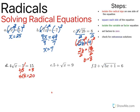Now we need to get rid of that four outside the radical symbol. We're going to do that by dividing both sides by four. Once I divide both sides by four, I'm left with the square root of x is equal to five. Now the radical is isolated, so we're going to square both sides to get rid of that square root. The squared and the square root undo each other, and five squared is 25. So the solution to this equation is x equals 25.